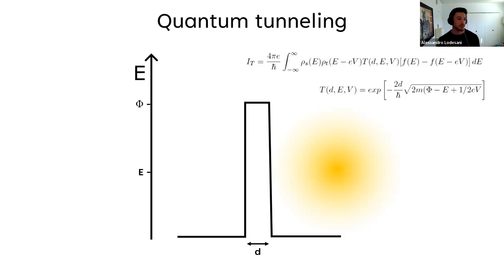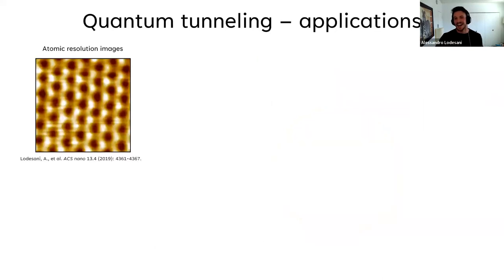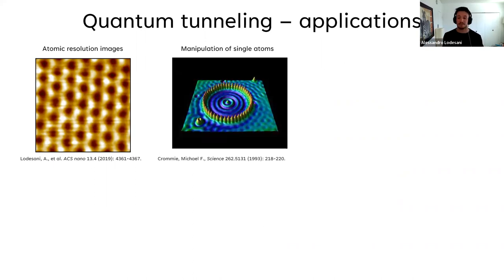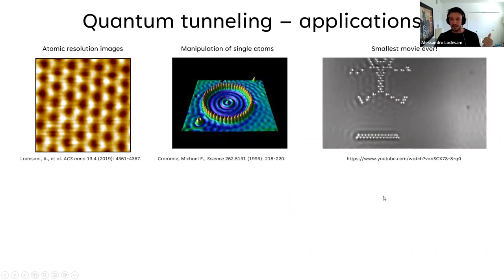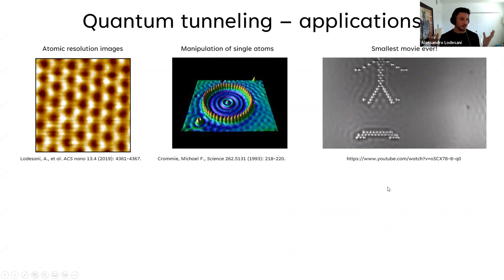Some examples of quantum tunneling in physics: you can use it to get atomic-resolution images — all of those dots are individual atoms, and you can see the honeycomb shape of graphene. You can even pick up single atoms and move them around to create structures at the atomic level. IBM famously used this to make a stop-motion movie by moving individual atoms, earning the Guinness World Record for the smallest movie ever made.